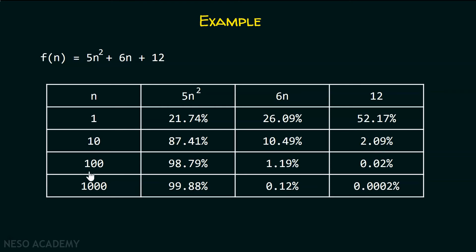For n equal to 100, 5n² contributes 98.79% of the time, while 6n takes only 1.19% and 12 takes just 0.02%. Increasing n further, 5n² takes 99.88% of the time, 6n takes 0.12%, and 12 takes just 0.0002%. These latter terms are almost negligible — most of the time is consumed by the 5n² term.